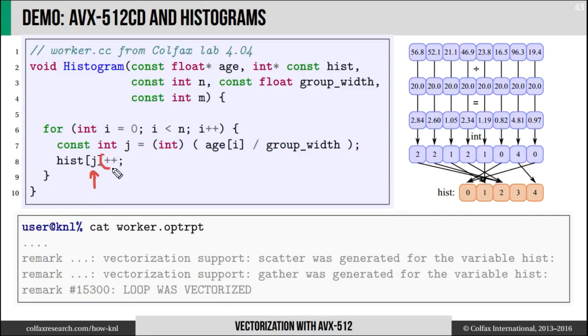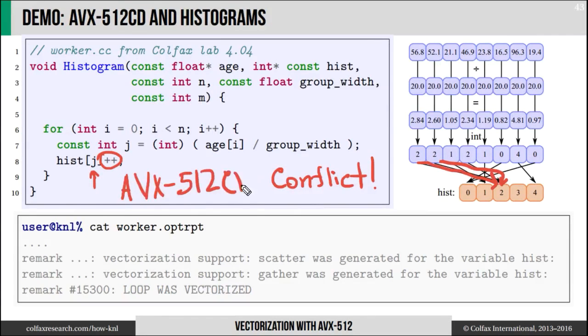But this last step where I use the group number to go to a certain location in memory and increment the counter there - that one is tricky. Because if in one vector lane I have the value 2, I go to age group number 2, but in the next lane I may have the same exact value, and that's a problem because I have a conflict. In fact, on older Xeon processors and on first generation Xeon Phi, this loop will not vectorize at all. But on Knights Landing second generation Xeon Phi, thanks to AVX-512 conflict detection instructions, this loop is going to get vectorized and we will see what it takes to make this happen.